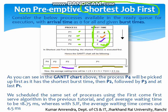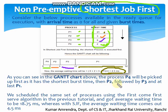After calculating, we get the average waiting time as 4.5 milliseconds. As you can see in the Gantt chart, process P4 is picked up first as it has the shortest burst time, then P2, followed by P3, and finally P1.